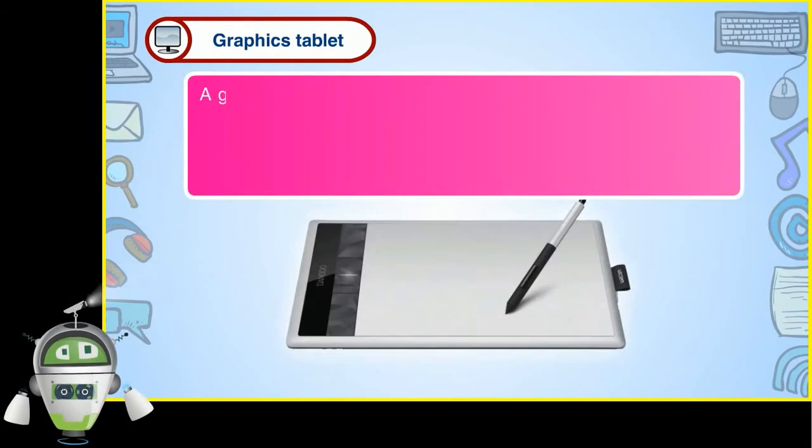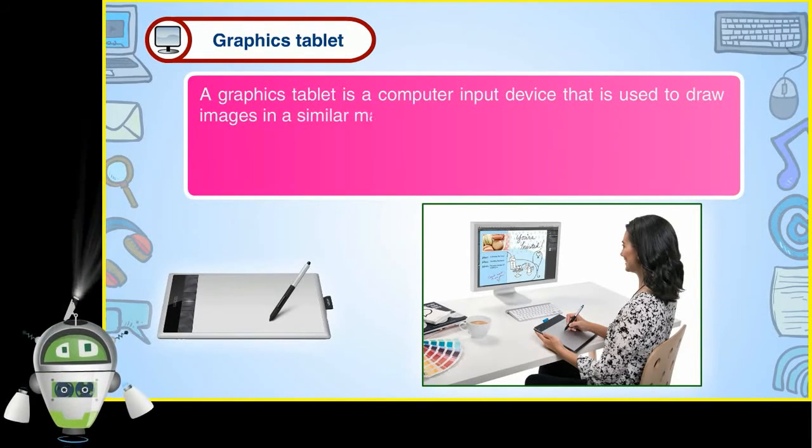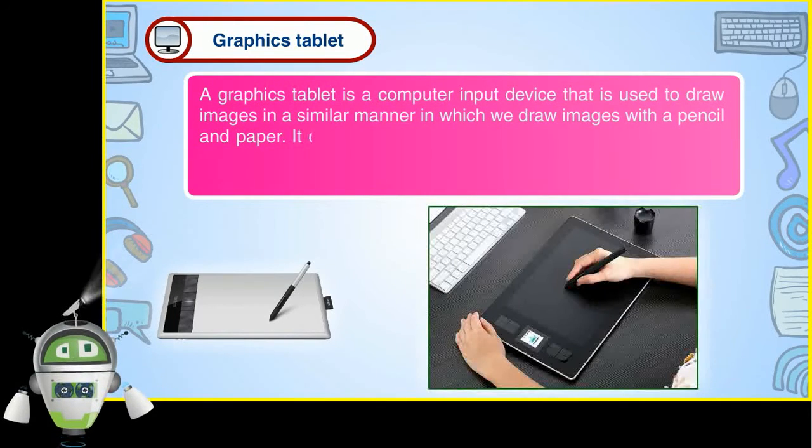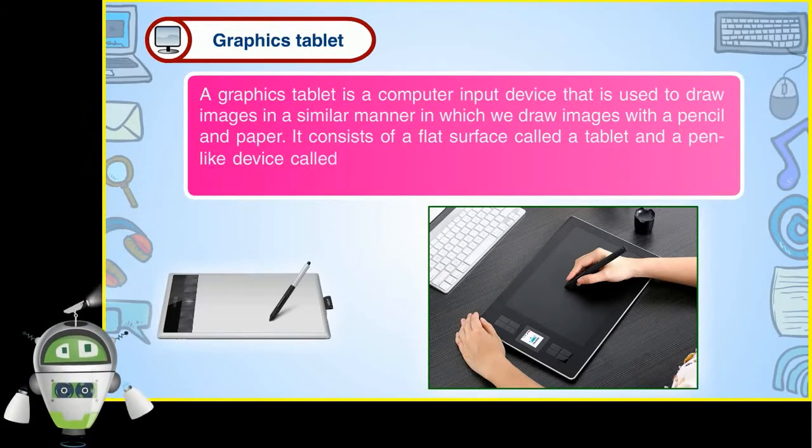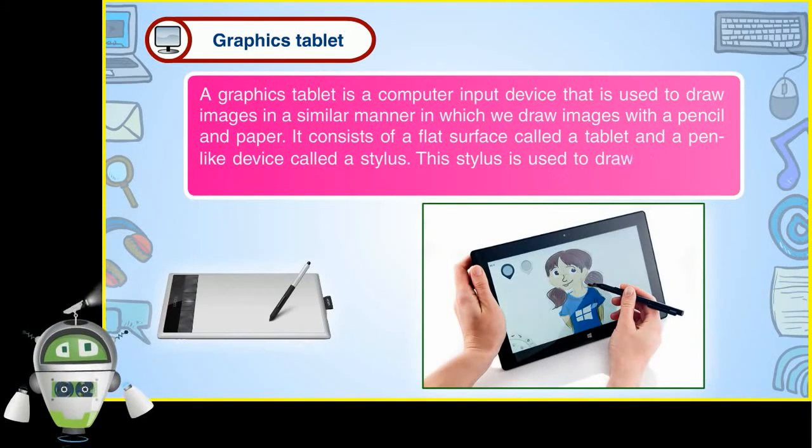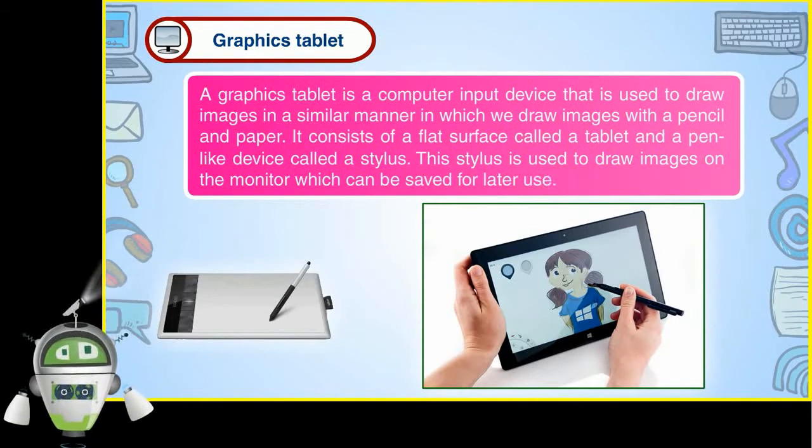Graphics tablet: A graphics tablet is a computer input device that is used to draw images in a similar manner in which we draw images with a pencil and paper. It consists of a flat surface called a tablet and a pen-like device called a stylus. This stylus is used to draw images on the monitor which can be saved for later use.